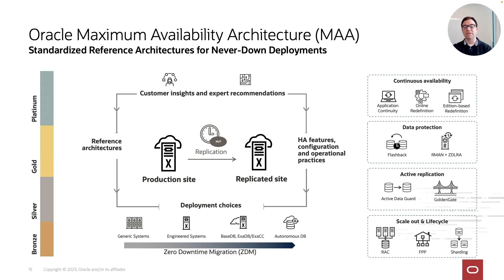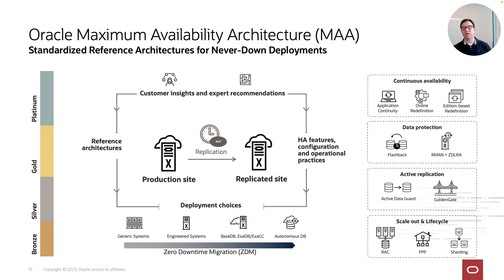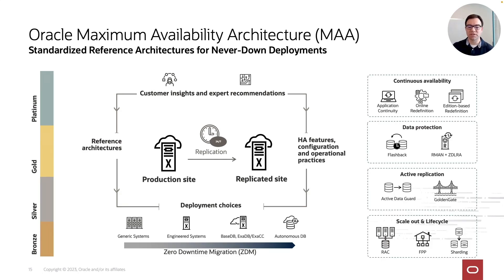The typical setup around which MAA provides configurations and best practices includes a production site and ideally a replicated site. The silver level would assume you have a production site, a regular backup, and probably a cluster — symbolized here by the Exadata engineered system. To protect against disaster, you replicate data across distance to a replicated site, entering the gold standard.